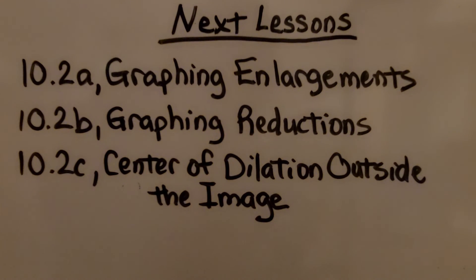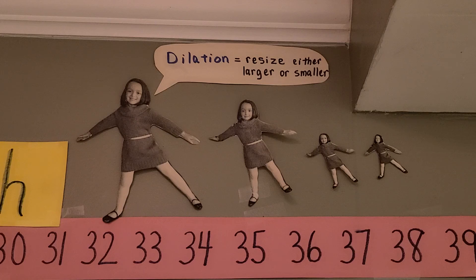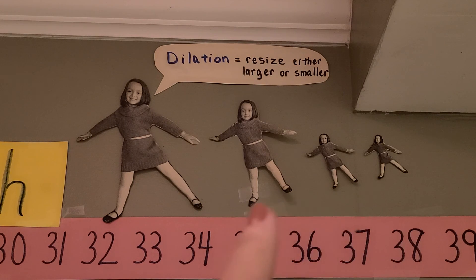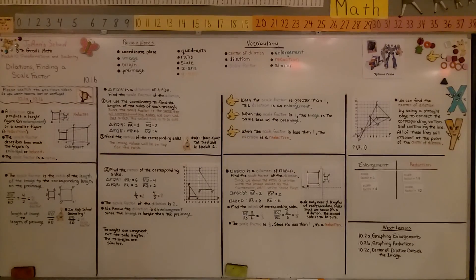We're finished with lesson 10.1, moving on to 10.2, where we're going to be talking about graphing enlargements. Up here above my board near the ceiling I have a dilation — this is my granddaughter when she was young, getting smaller and smaller, or we could say larger and larger. A dilation is a resize, either larger or smaller. I hope you have a wonderful day, and join me for 10.2.